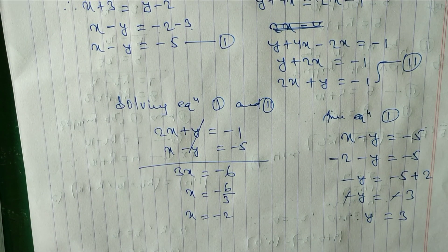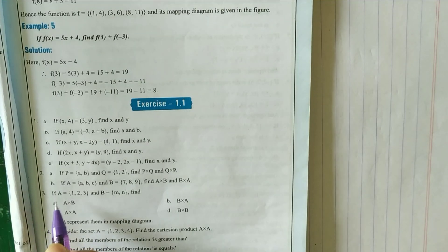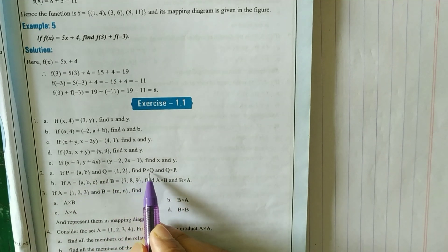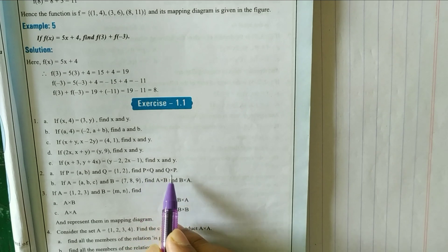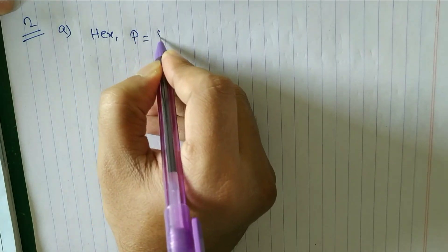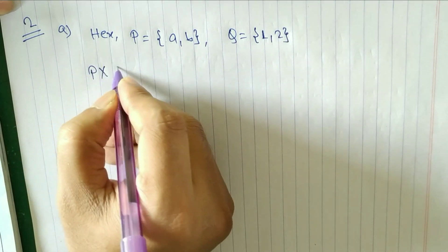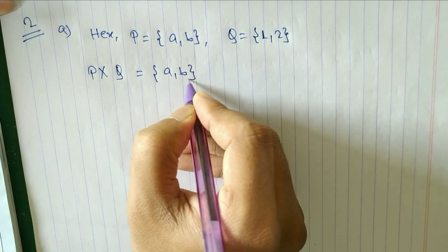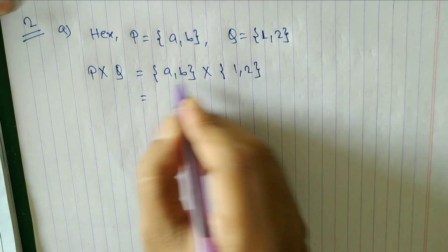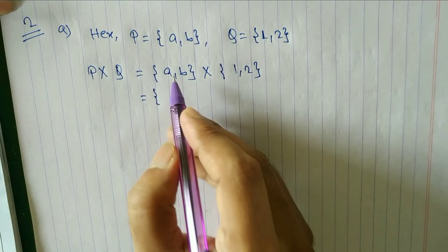Now watch question number 2. What is given: p = {a, b} and q = {1, 2}. We have to find p×q and q×p. To find p×q, we write the elements of p and q in coordinate form.